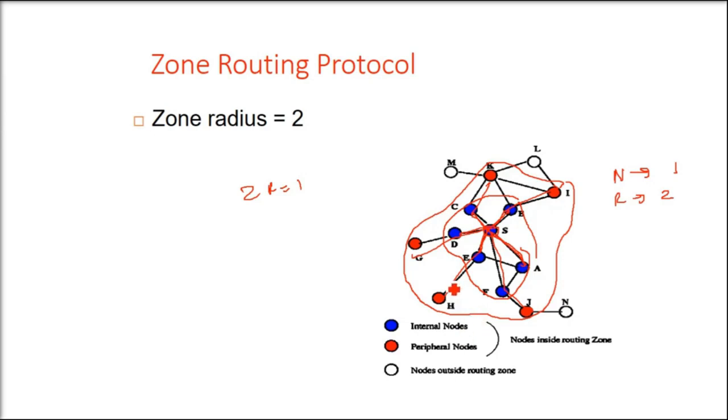So all blue and red will come in one zone. And these whites you see outside, they will be in different zones, Z2 you can say. Nodes outside routing zone.